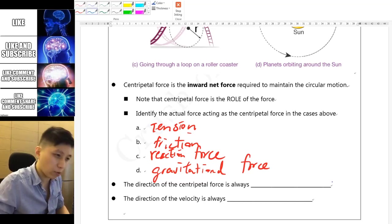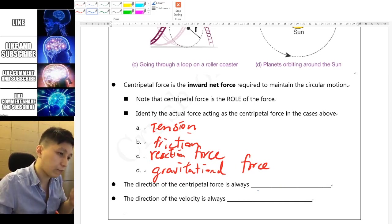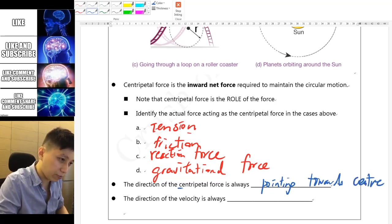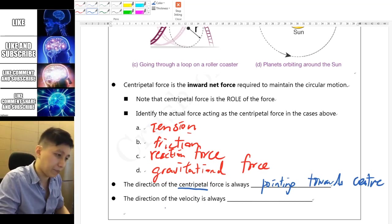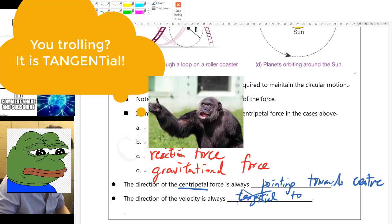Okay next, talking about the direction. Remember, force is a vector, velocity is also a vector, so they must have direction. The direction of the centripetal force is always pointing towards center, and that's why it's called centripetal because this is the meaning of this word, it means seeking the center. Direction of the velocity will be tangential to the circle.